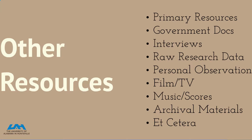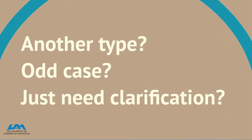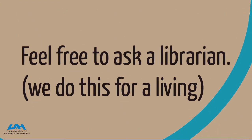Some other types of resources you might run into include primary resources, government documents, interviews — both your own and interviews that others did — raw research data, personal observations, film and TV, music, musical scores, archival materials, and many more. If you find one of these other types, find an odd case, or just need clarification, remember you can feel free to ask a librarian — we do this for a living.